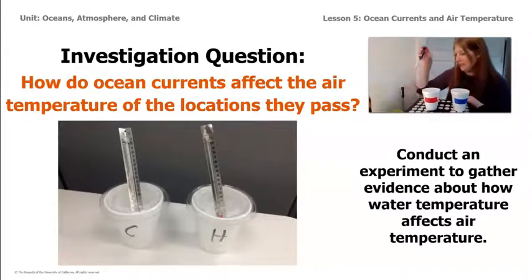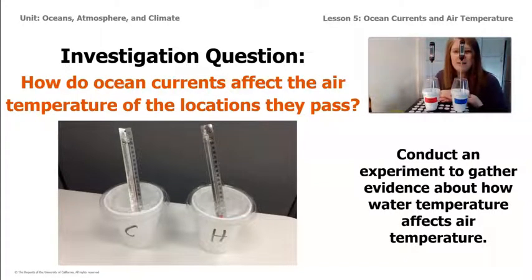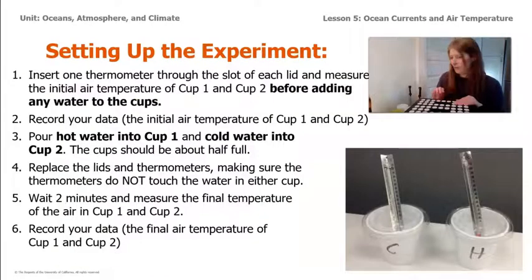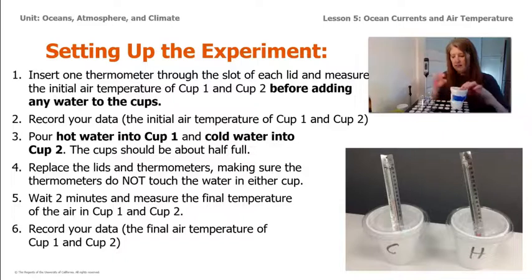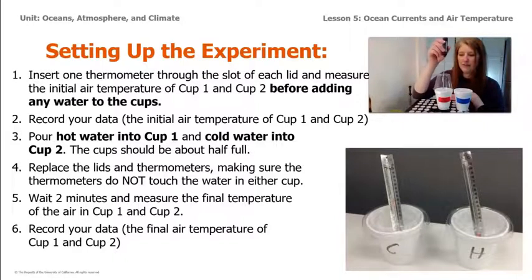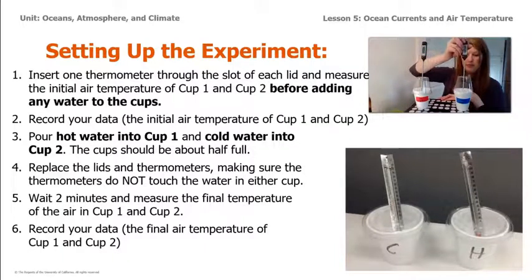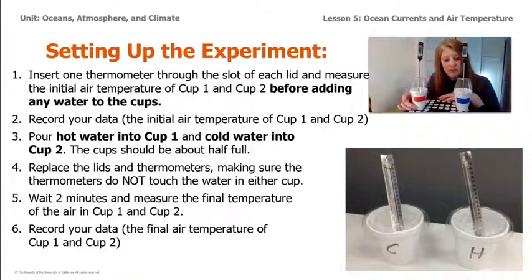Here's the setup — mine's going to be slightly different from the picture you see on the screen. We are going to take one thermometer and put it into a lid. I'm using a plastic cup with a hole drilled in the bottom so the thermometer can be suspended in the cup. Then we're going to take one of our cups — this one is labeled cold water and this one is labeled hot water — and place the thermometers on the cup. The cup is empty; we're just going to measure the temperature of the air in the cup. We'll record our initial temperature of the air. Initial means beginning — what does it start as?